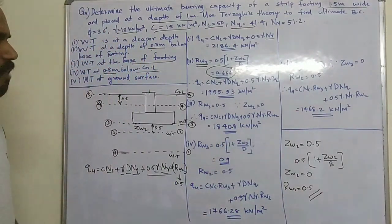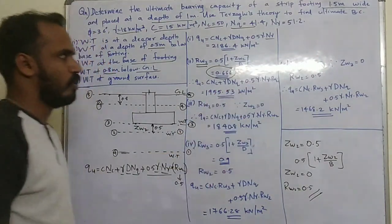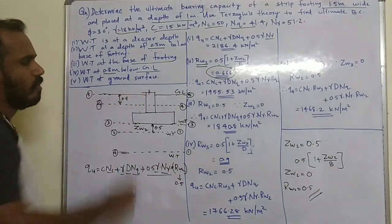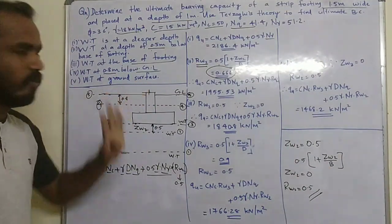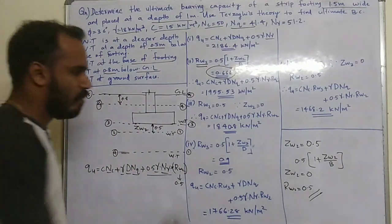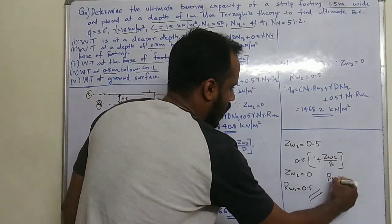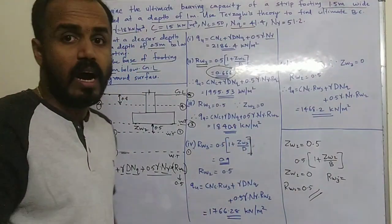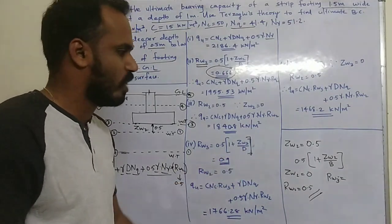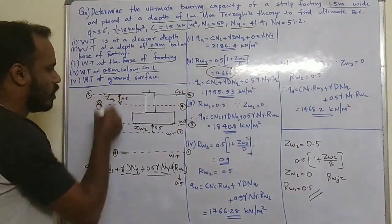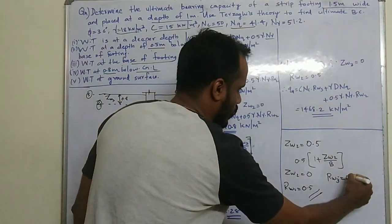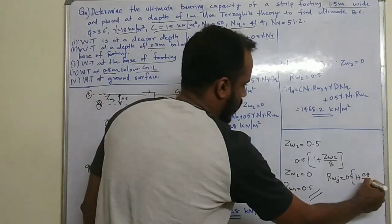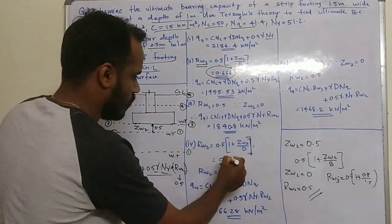For Condition 4, the water table is 0.8 m below the ground surface. Using the Rw3 formula: 0.5 into (1 plus Zw3 divided by D). Substituting Zw3 = 0.8 m and D = 1 m gives Rw3 = 0.5 × (1 + 0.8/1) = 0.9.